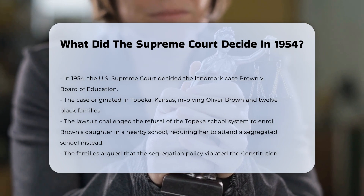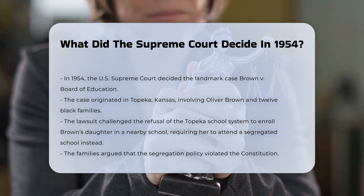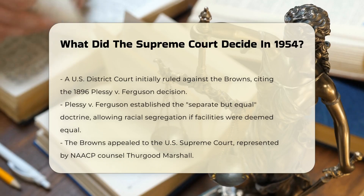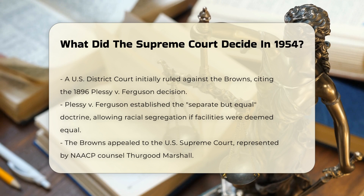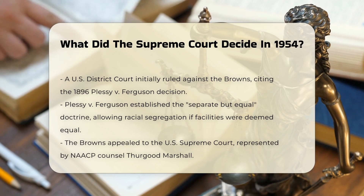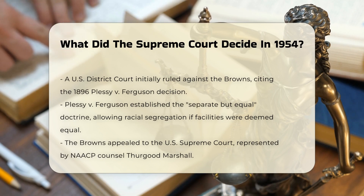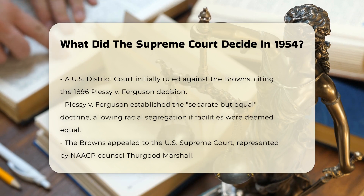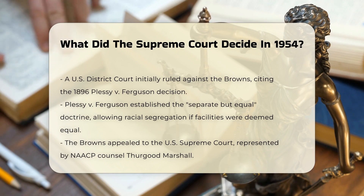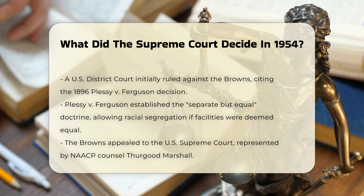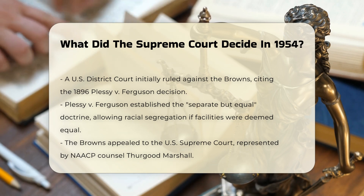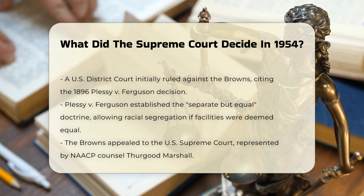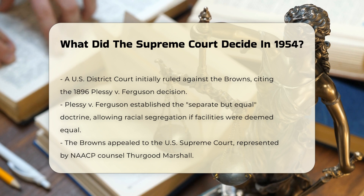The families argued that this segregation policy was unconstitutional. The case was initially heard by a U.S. district court in Kansas, which ruled against the Browns, citing the precedent set by the Supreme Court's 1896 decision in Plessy v. Ferguson. This earlier decision had established the separate but equal doctrine, which allowed racial segregation as long as the facilities were equal in quality. However, the Browns, represented by NAACP Chief Counsel Thurgood Marshall, appealed this decision to the U.S. Supreme Court.